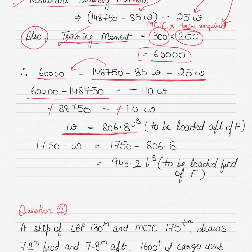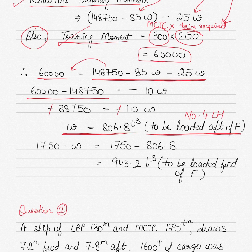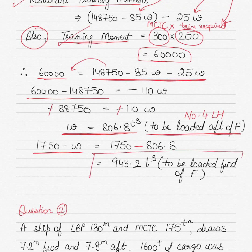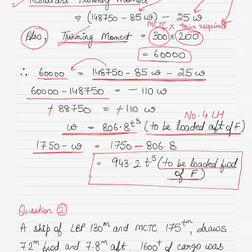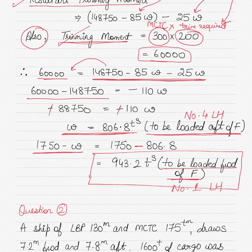W equals 806.8 tons, which is to be loaded aft of the center of rotation in number four lower hold. The remaining cargo for number one lower hold is 1750 minus 806.8, which equals 943.2 tons, to be loaded forward of the center of rotation in number one lower hold. That completes the cargo distribution for question one.